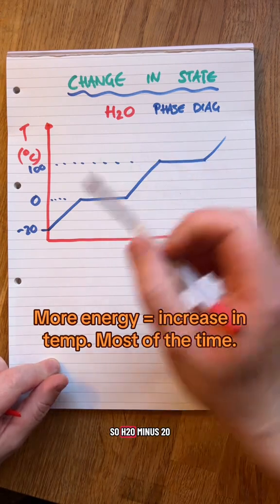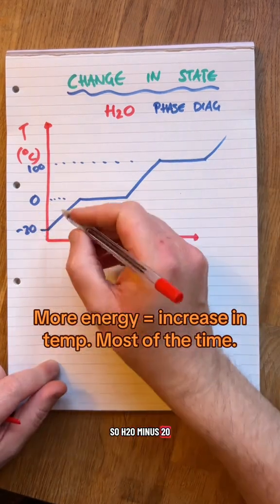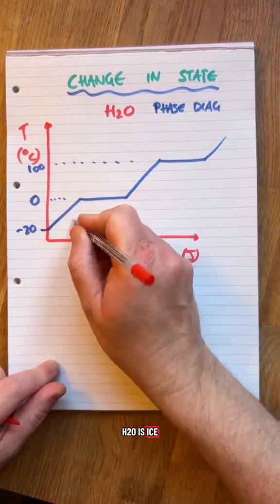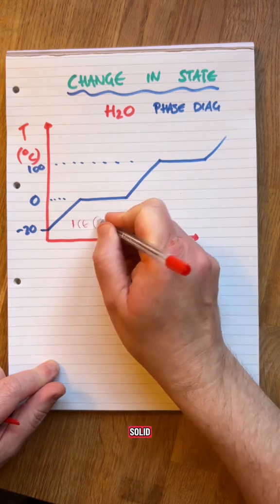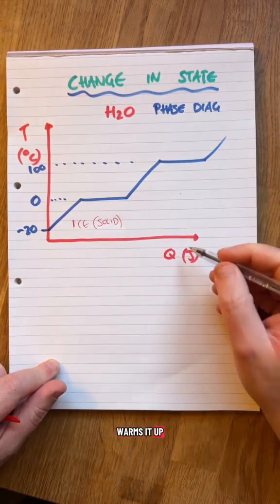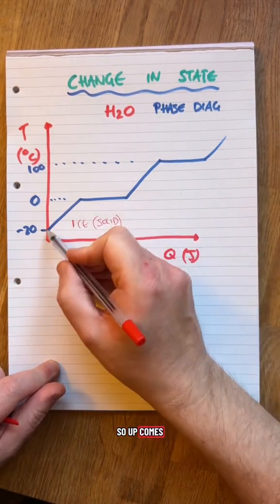H2O at minus 20, H2O is ice, solid. We then add energy and it warms it up a bit. So here comes temperature.